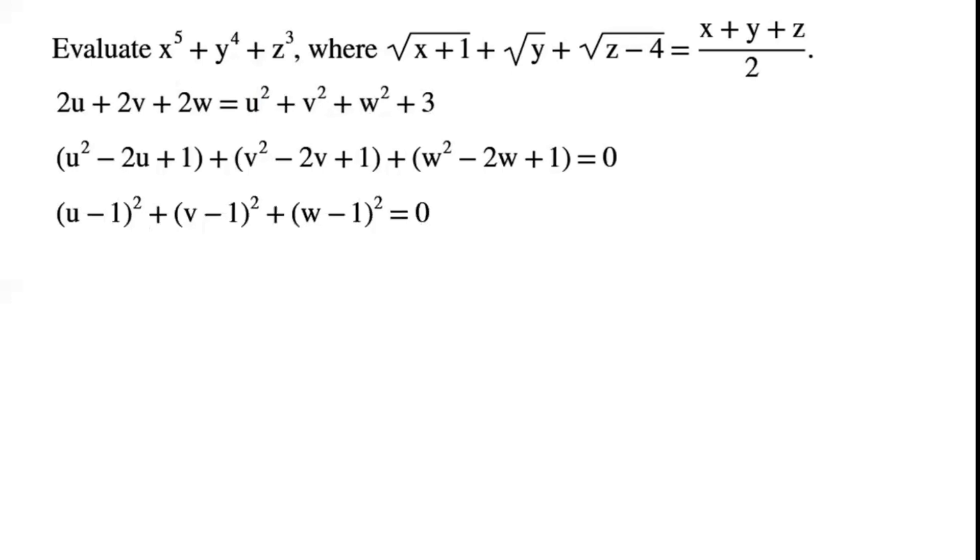Each quadratic form can be written as a perfect square. So u minus 1 all squared plus v minus 1 all squared plus w minus 1 all squared equals 0. The sum of three perfect squares equals 0.